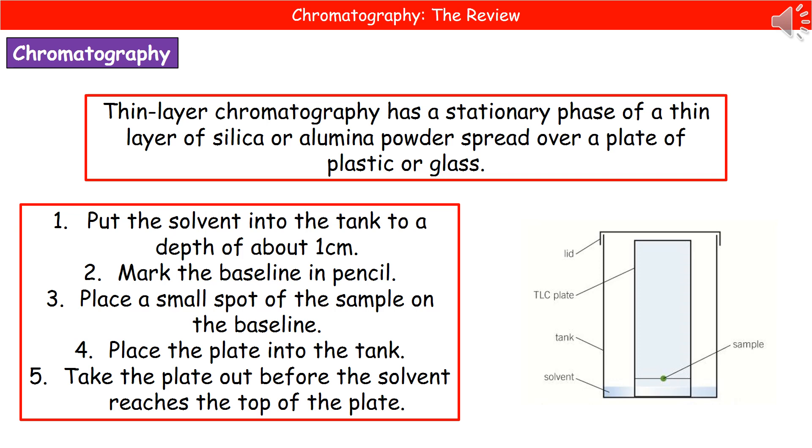A slightly more upper class version of this is thin layer chromatography. Thin layer chromatography you're less likely to do in school because the plates are pretty expensive. But what we actually have is the stationary phase is a thin layer of silica or alumina powder, which is spread over this sheet of plastic or glass. You get this real fine powder coating which is attached onto the plastic or the glass.